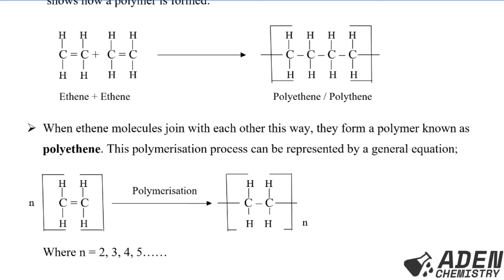In case you want to do the polymerization for propene, you do the same thing: propene plus propene will give you polypropene. When ethene molecules join with each other this way, they form a polymer known as polyethene.